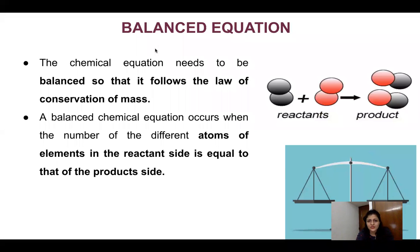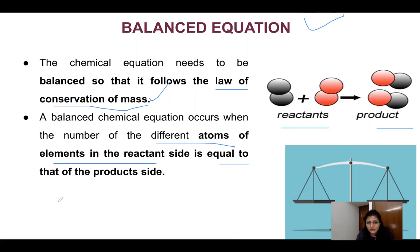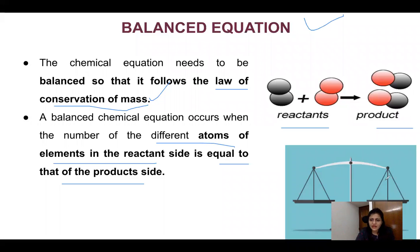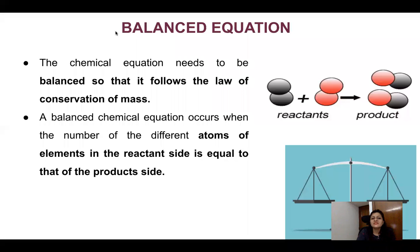Next is the balanced equation. A balanced equation follows the law of conservation of mass — the number of atoms of each element on the reactant side must be equal to the product side. As you can see in this diagram, the atoms are equal on both sides. So a balanced equation satisfies the law of conservation of mass, unlike the skeletal equation which is unbalanced.